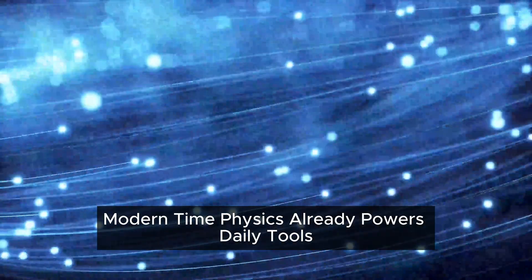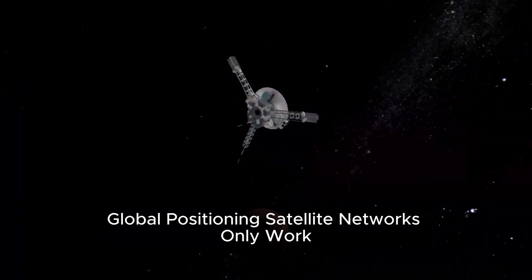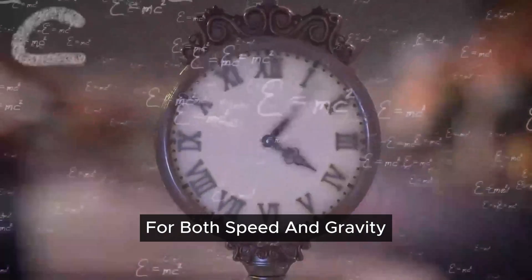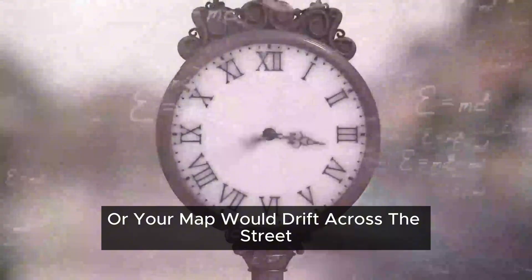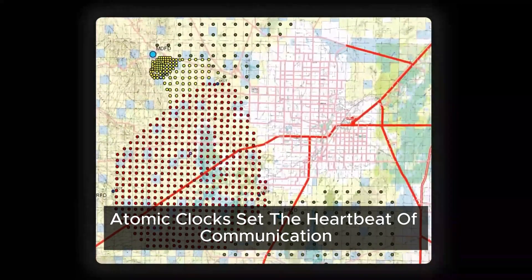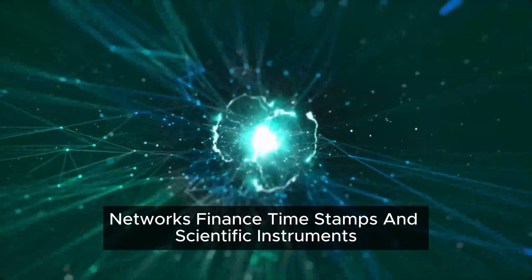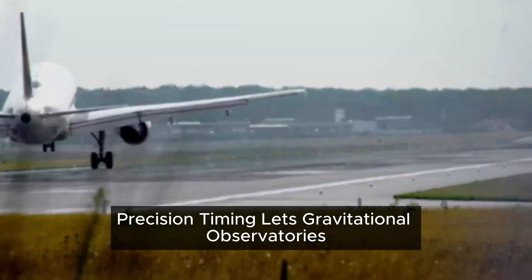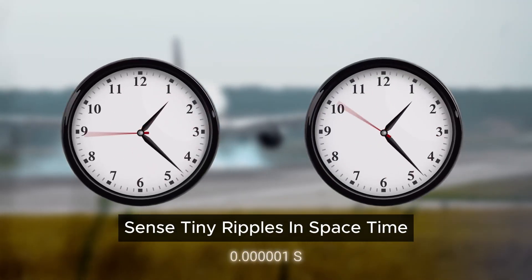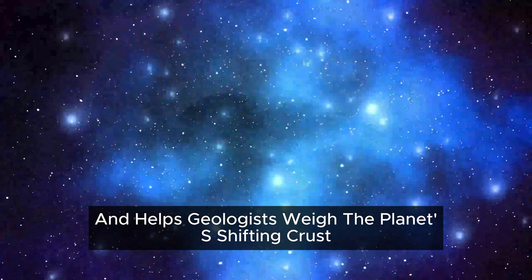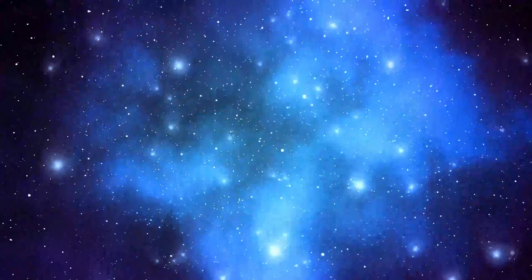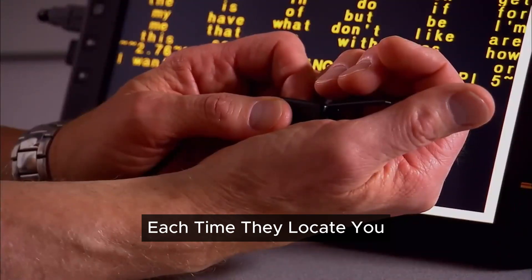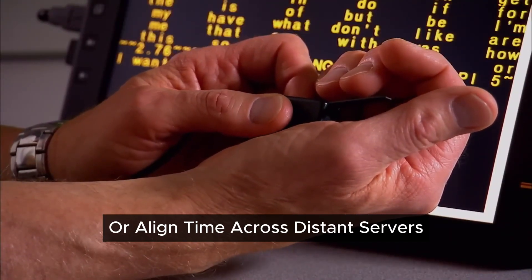Modern time physics already powers daily tools. Global positioning satellite networks only work because their onboard clocks are corrected for both speed and gravity, or your map would drift across the street. Atomic clocks set the heartbeat of communication networks, finance timestamps, and scientific instruments. Precision timing lets gravitational observatories sense tiny ripples in space-time and helps geologists weigh the planet's shifting crust. Even consumer cameras and phones lean on relativistic corrections each time they locate you or align time across distant servers.